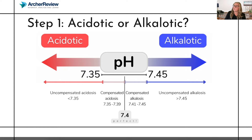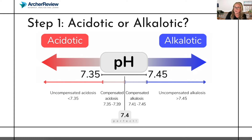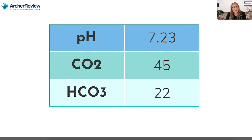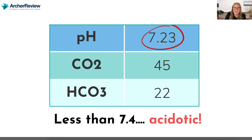So step one — are we acidotic or alkalotic? This is the easiest place to start because all you need to do is look at that pH. 7.4 is a perfectly balanced neutral pH. Anything to the left of that is going to air on the side of acidosis. If the party is going over to the right, going above 7.4, it's becoming alkalotic. Let's practice together. Here we have a pH of 7.23, a CO2 of 45, and a bicarb of 22. That pH is 7.23 — it is acidotic. It is to the left, or less than 7.4. Anything less than that perfectly balanced 7.4? Acidotic.